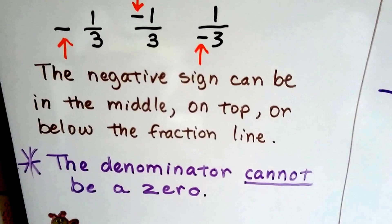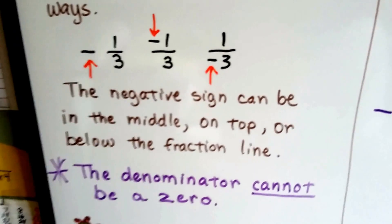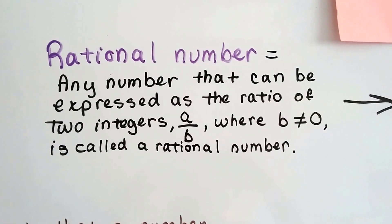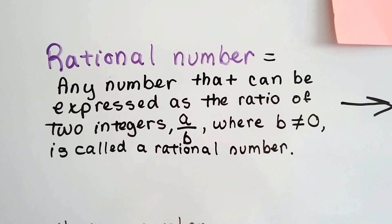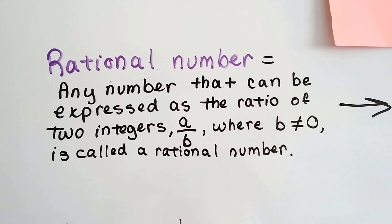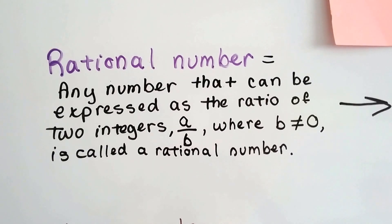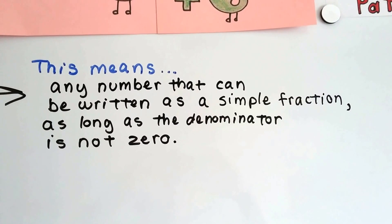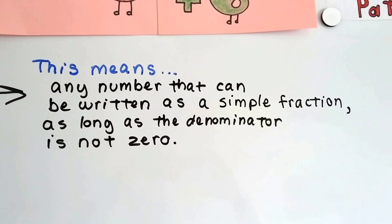As long as the denominator is not zero, then it's a rational number. So here's the formal definition. A rational number is any number that can be expressed as the ratio of two integers, like a over b, where b is not equal to zero, and it's called a rational number. So what this means is that it's any number that can be written as a simple fraction, as long as the denominator is not zero.